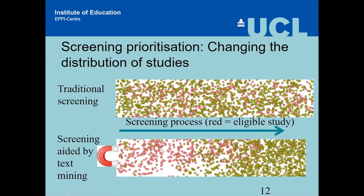It's not a perfect process — there are some irrelevant citations appearing near the beginning, and some relevant ones mixed towards the end. Depending on how well the machine is performing, you get different distributions.